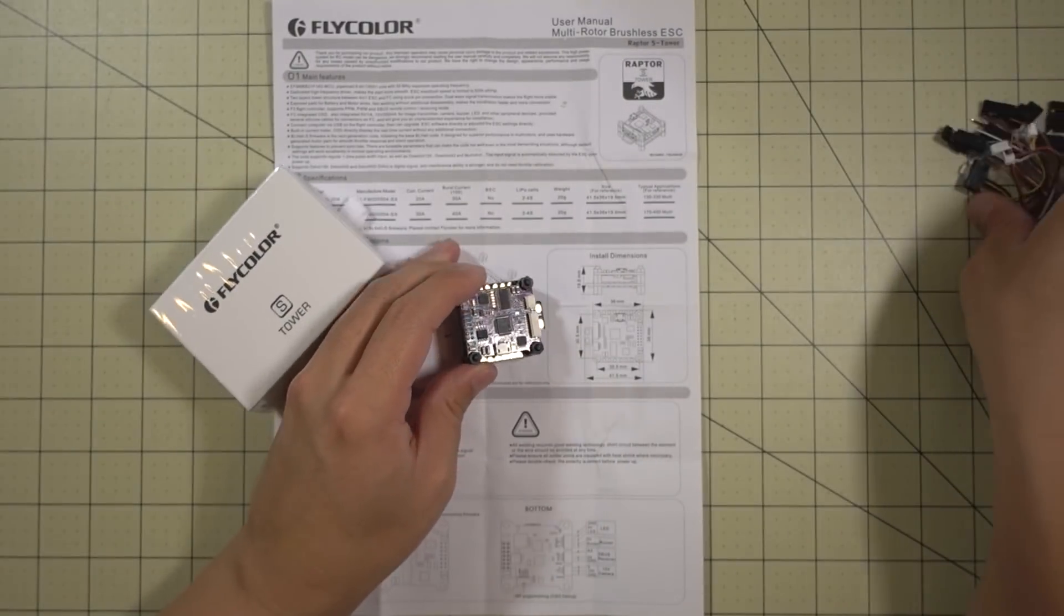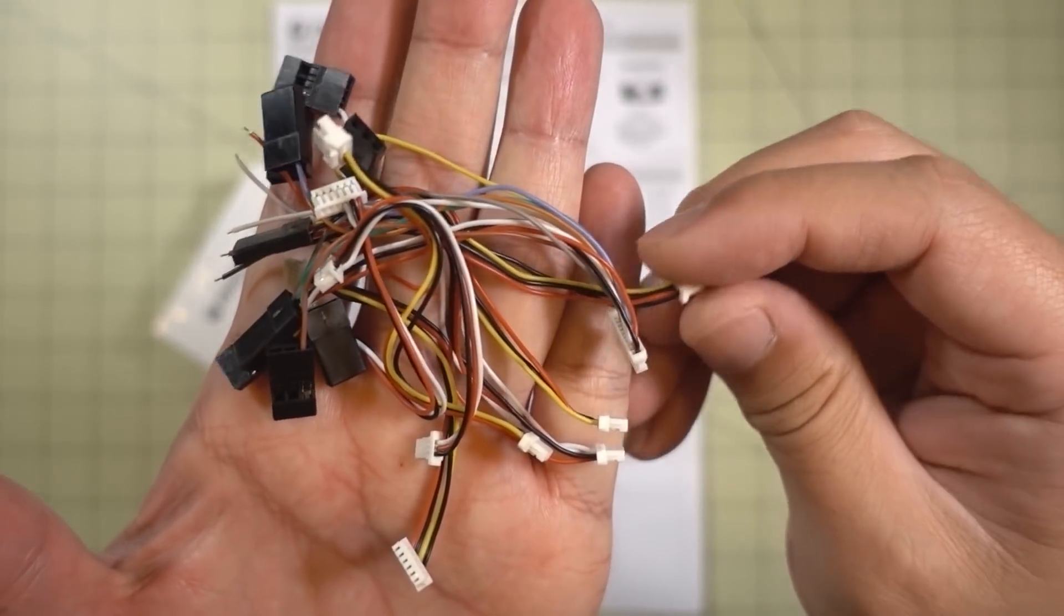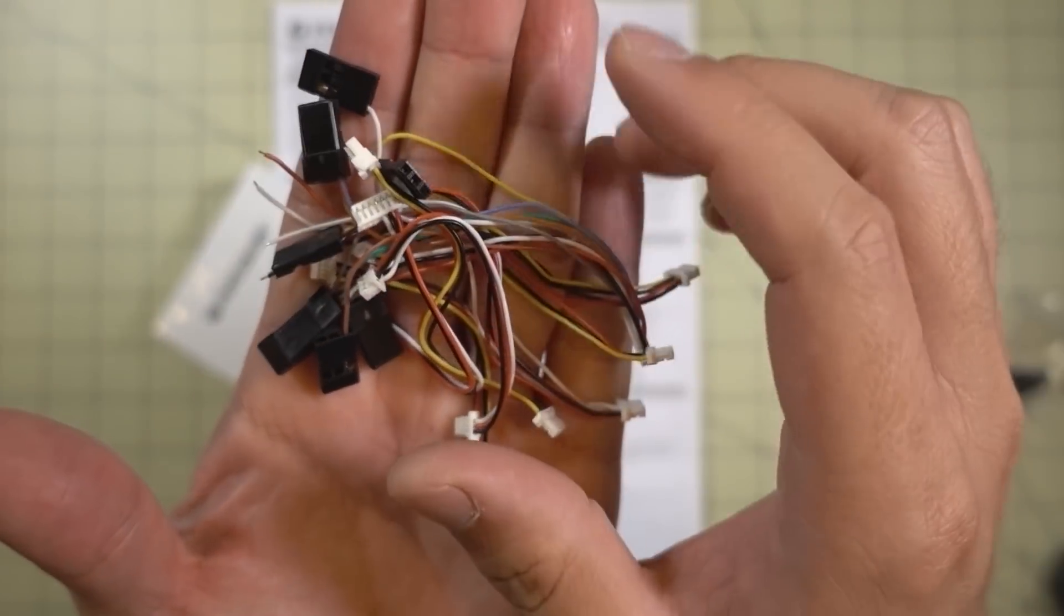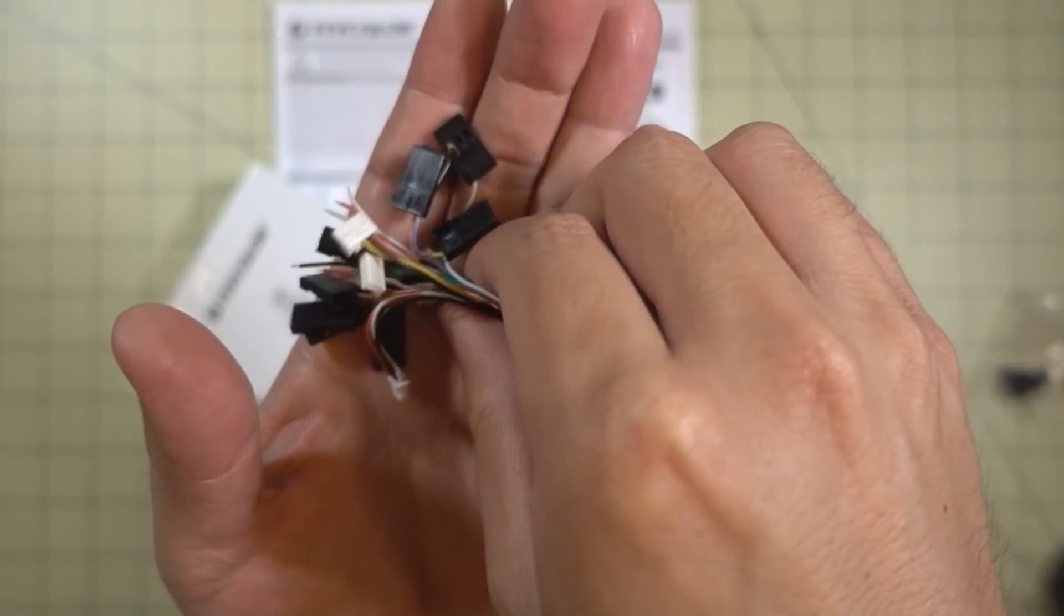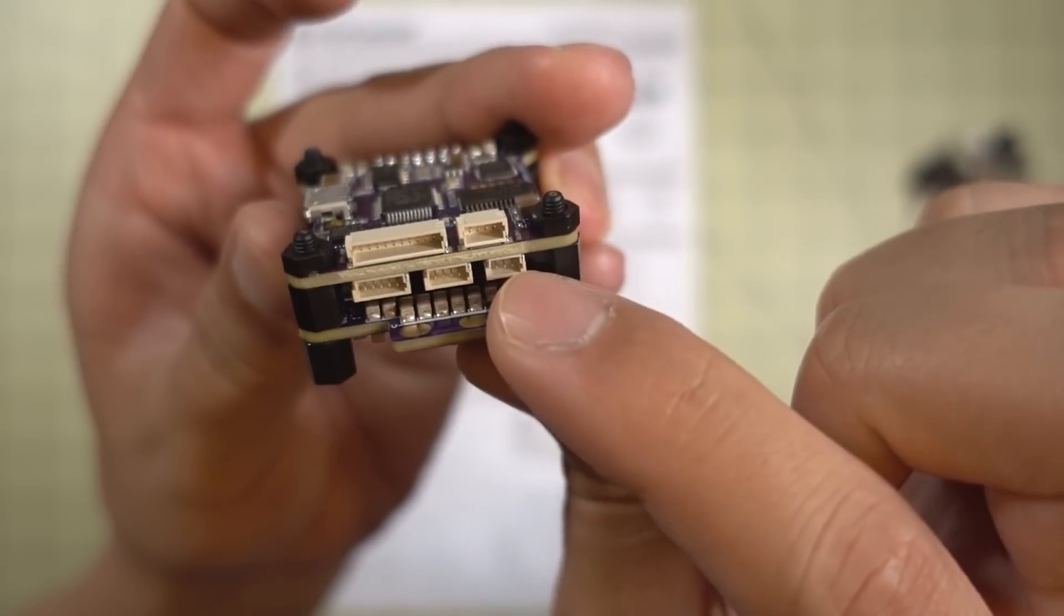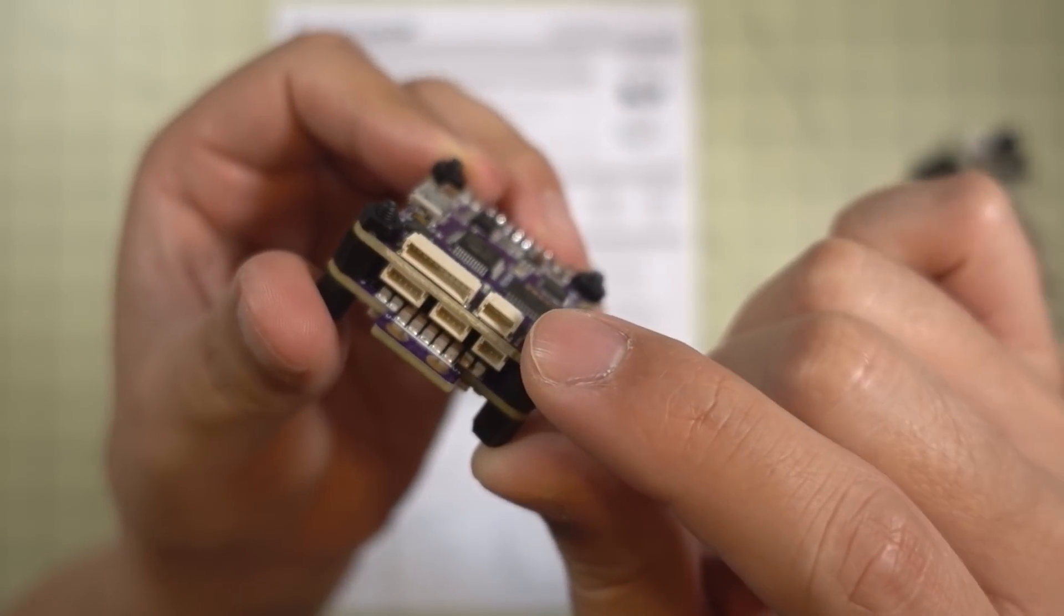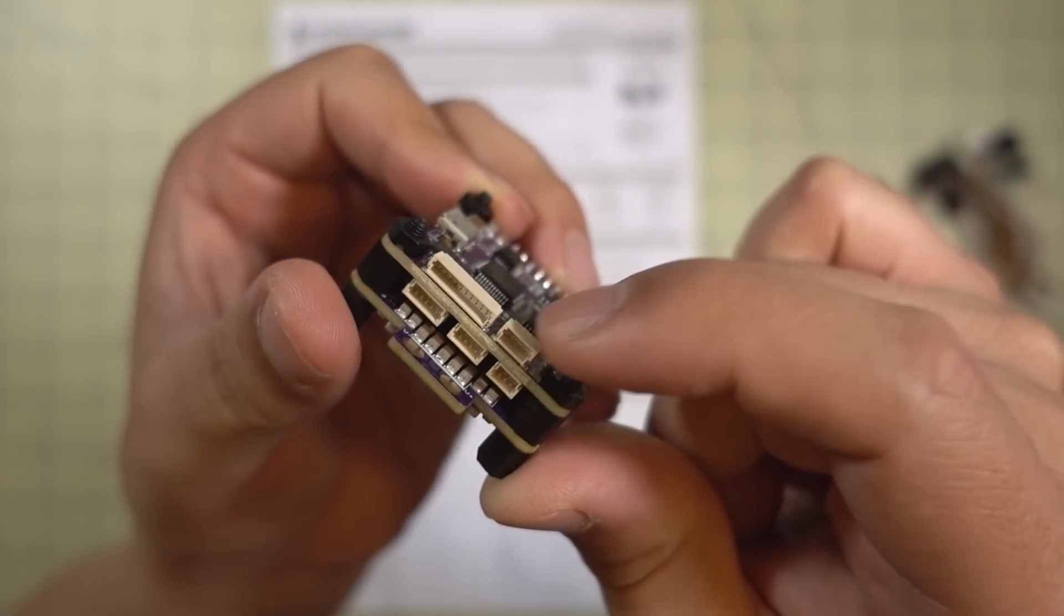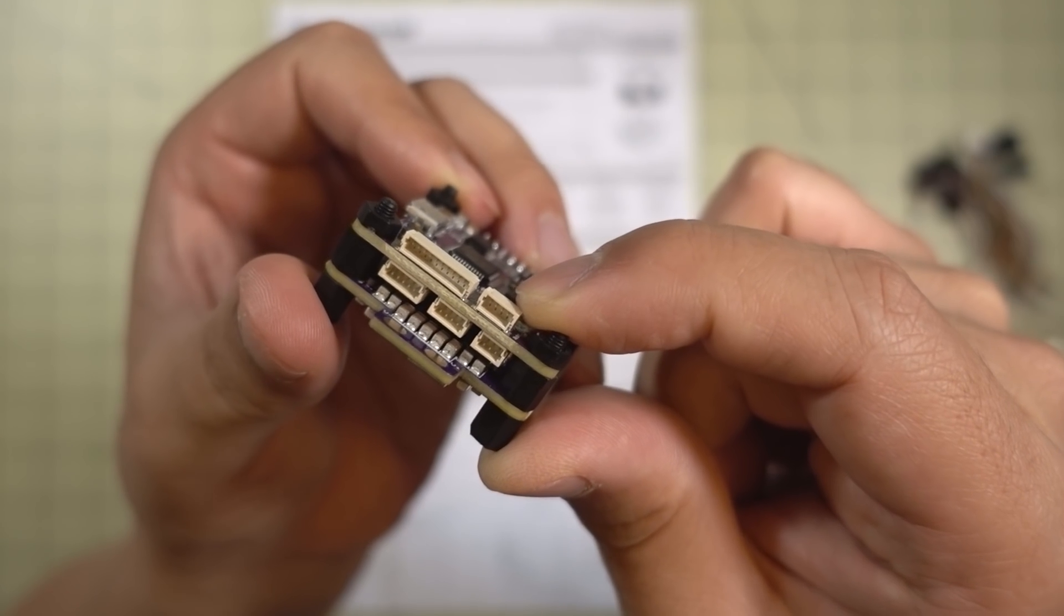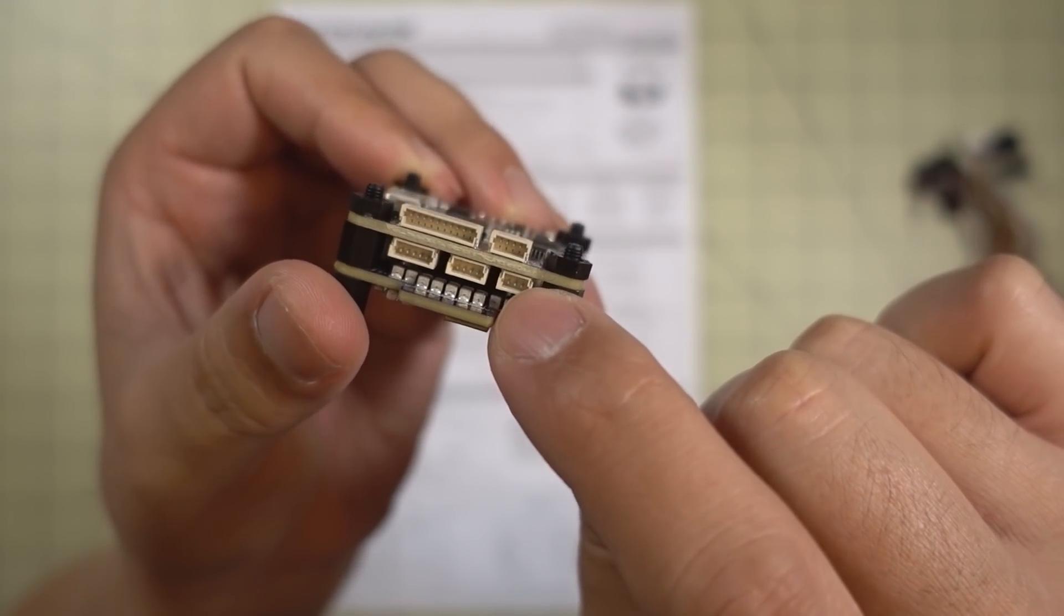It does come with a bunch of micro connector cables here that go into the connectors on the side of the flight controller. The ones I think are important are the one for your video transmitter and this one for your camera.